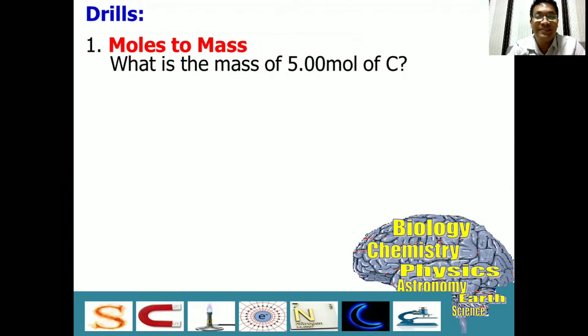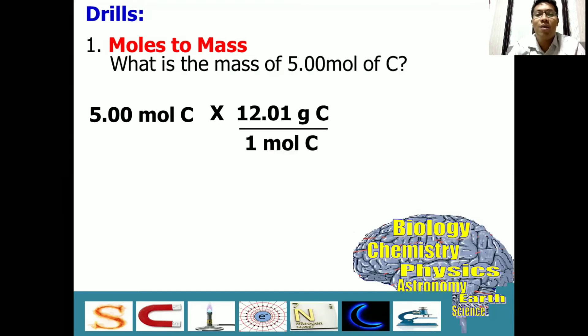What will be our step? First, write down the given, which is 5 mole of carbon. Then, we have to multiply it with 12.01 grams. As I said, this data is available in the periodic table. You just have to check the atomic mass of carbon for this instance. Then, we have to divide it by 1 mole. Because if you remember, 1 mole of carbon is always equal to 12.01 grams. And with that, we have mole in the numerator and mole in the denominator.